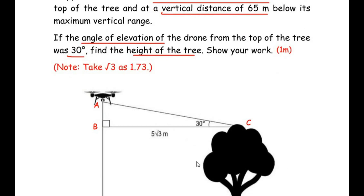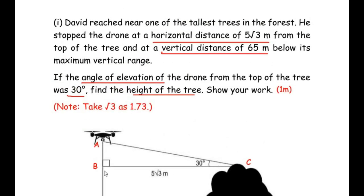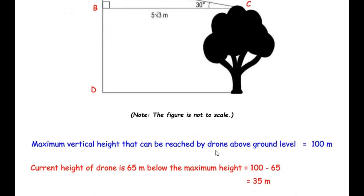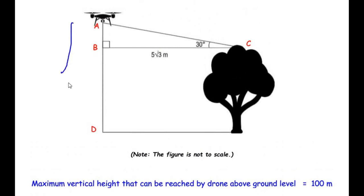Coming to the first sub-question, we have to find out the height of the tree. The horizontal distance of the drone from the top of the tree is 5√3 meters. Another important piece of information is the drone is at a vertical distance of 65 meters below its maximum vertical range. The maximum vertical range is 100 meters, and the drone is 65 meters below, so it is at a height of 100 minus 65 meters. The current height of the drone from the ground is 35 meters.